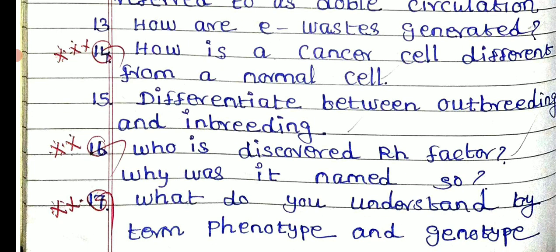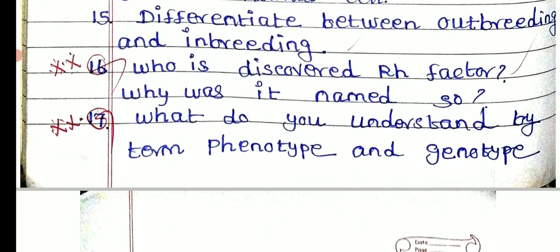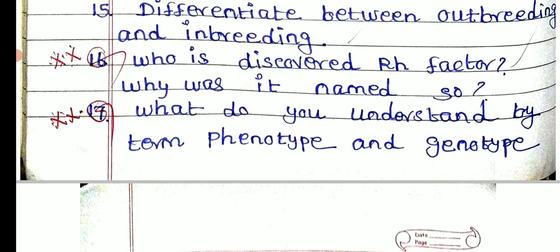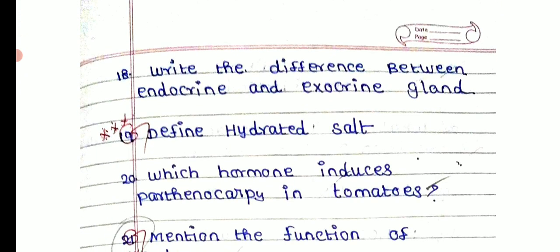Who discovered the Rh factor? What is a named cell? What do you understand by the terms phenotype and genotype?